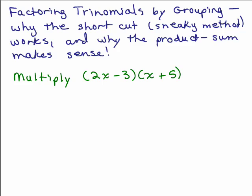In this video, we're going to factor trinomials by the grouping method when possible. So this means we're going to take a trinomial, rewrite the middle term as two terms, so there's four terms, and use the grouping method. This will also explain why the shortcut or sneaky method works, which I've covered in previous video and why we use the product and sum.